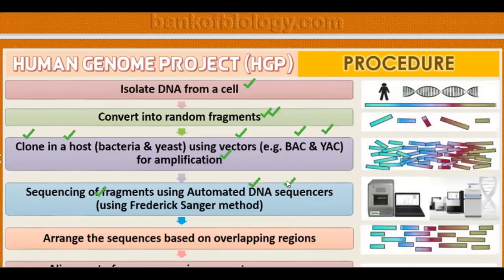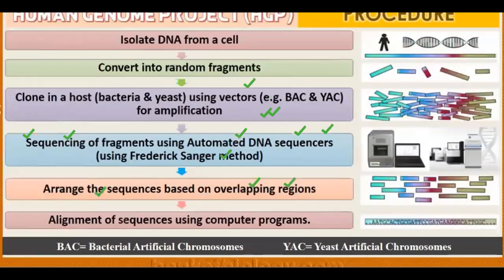After sequencing, multiplication, and everything, they arranged the sequences based on overlapping regions and alignment of the sequence using computer programs. So from all the genes present in the haploid set of chromosomes of human beings: first isolate it, then fragment and clone it, then sequence it, then arrange and align it properly using computer programs.